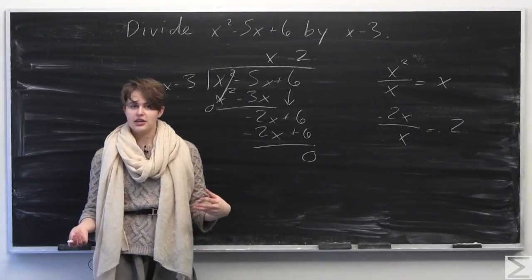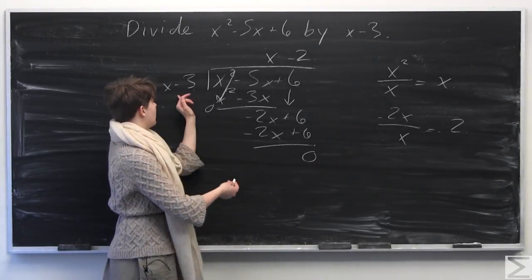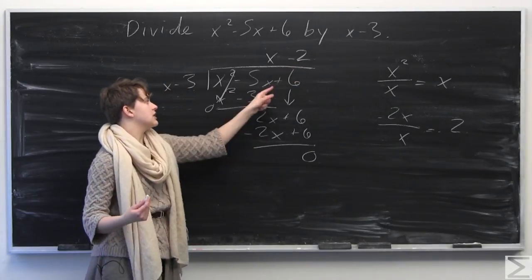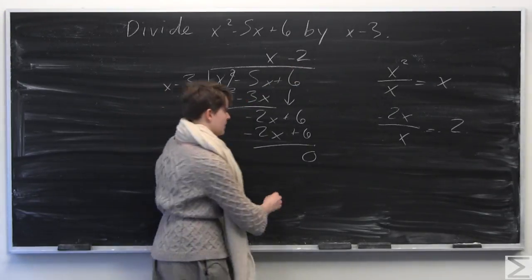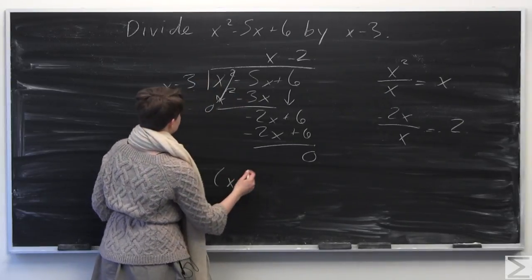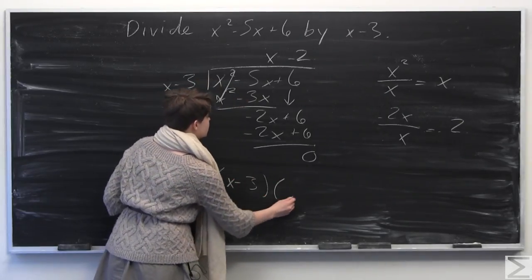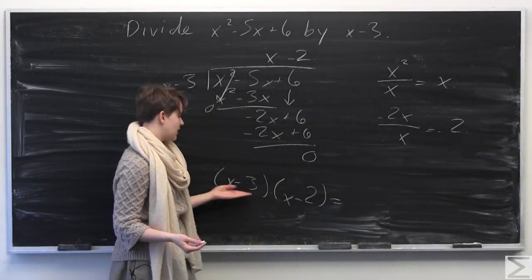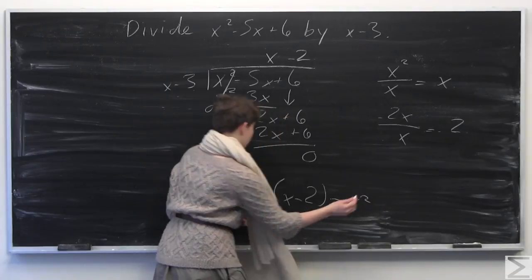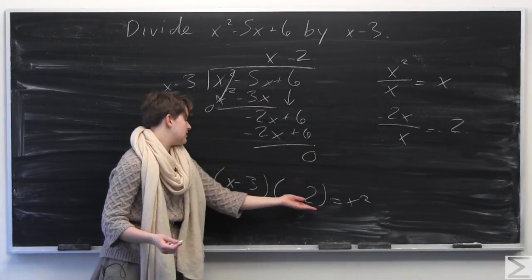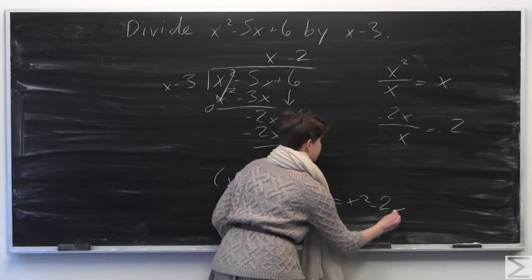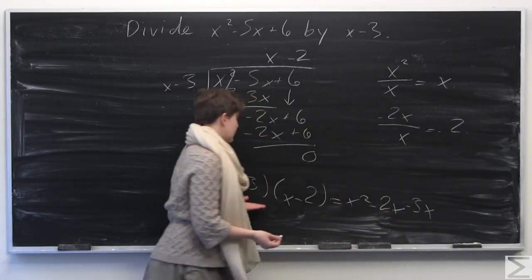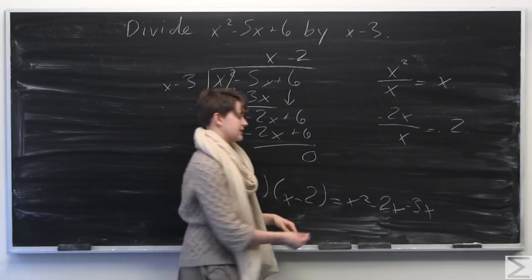A quick way to check our answer is to multiply x minus 2 times x minus 3 to make sure we get our original expression. Using the distributive property, x times x is x squared, x times negative 2 is negative 2x, negative 3 times x is negative 3x, and negative 3 times negative 2 is positive 6.